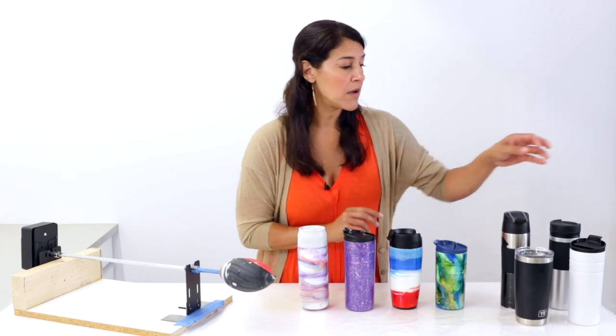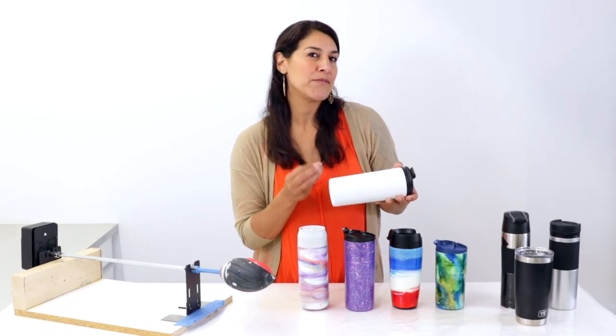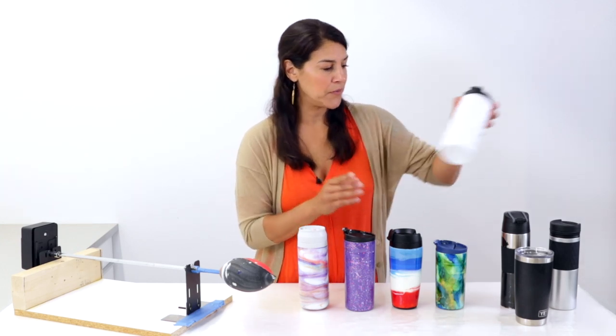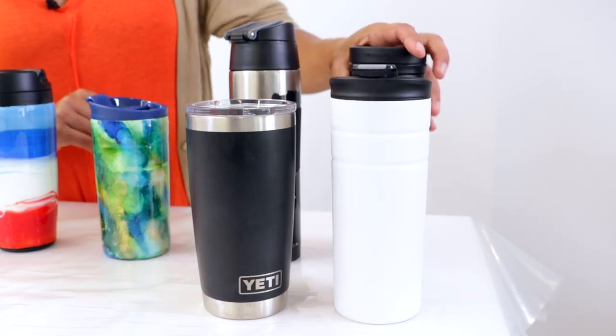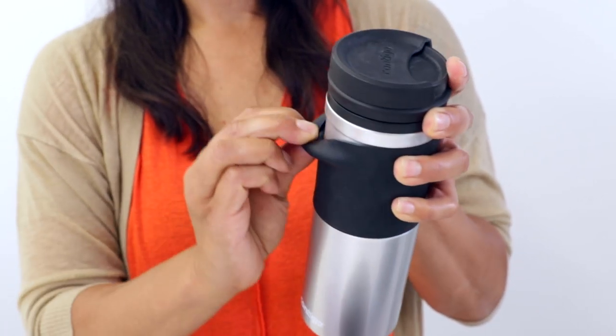If you do have a tumbler that has a bit of plastic on it, you can spray paint it with a spray paint that adheres to plastic. That's going to give some tooth for the resin to hang on to. If your tumbler has a silicone grip on it, always make sure that you peel back the silicone before you resin, because epoxy resin doesn't stick to silicone.